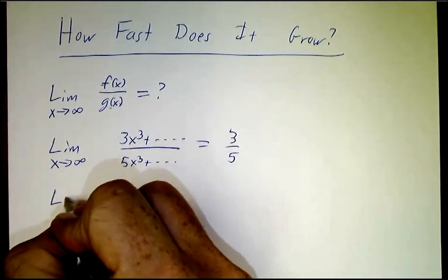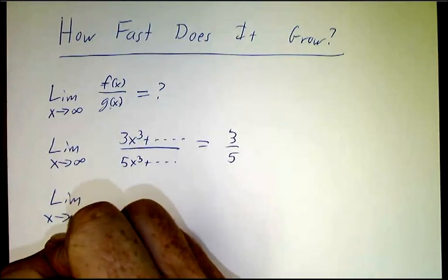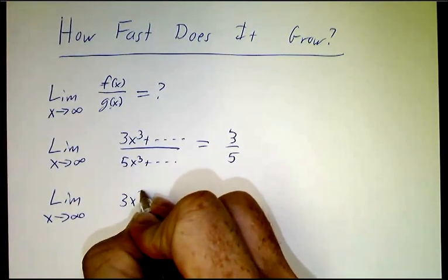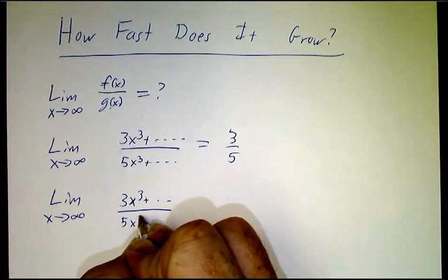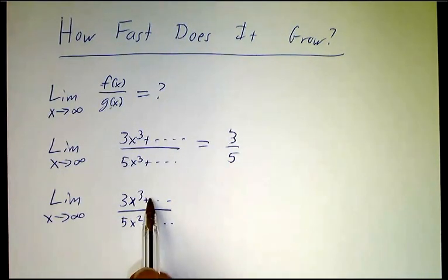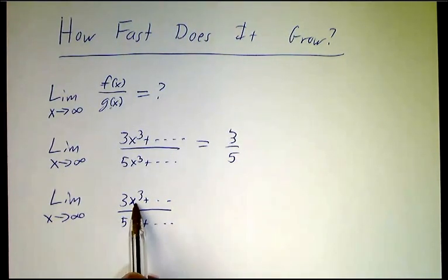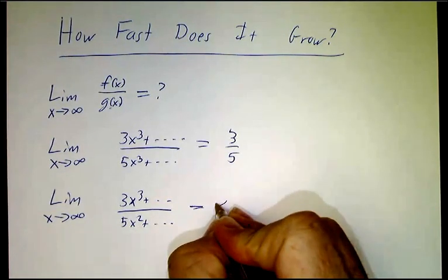On the other hand, if you want the limit as x approaches infinity of 3x³ plus stuff divided by 5x² plus stuff, now the top beats the bottom. Three factors of x beat two factors of x, and so this is going to be infinity.